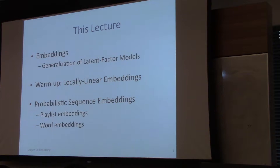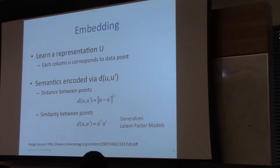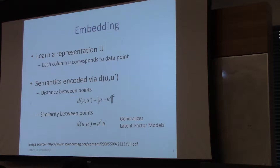The goal of an embedding, like in linear factor models, is to learn some representation matrix. We'll be looking at representations where we learn more than just a single U — for example, linear factor models learn both a U and a V. The basic idea is that we learn a representation over items or data points, and each column of this matrix corresponds to some low-dimensional representation learned automatically from data that encodes some notion of semantics.